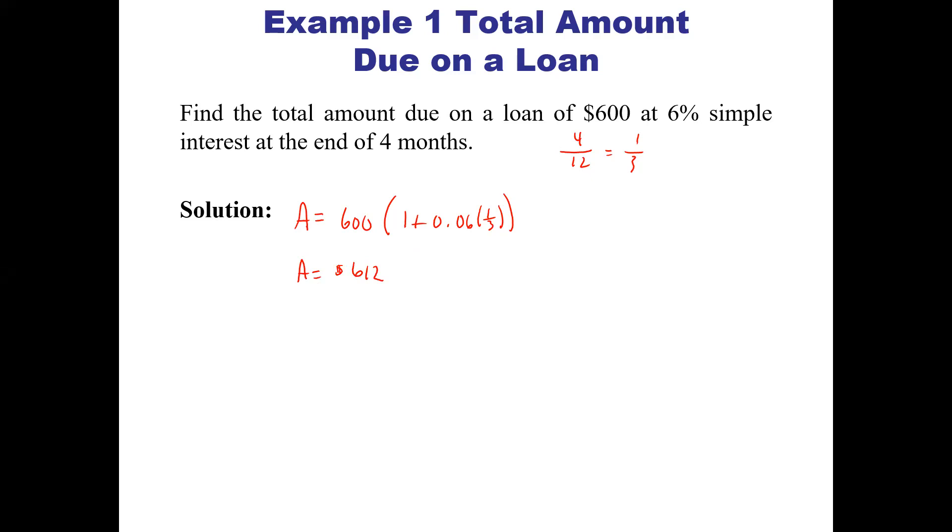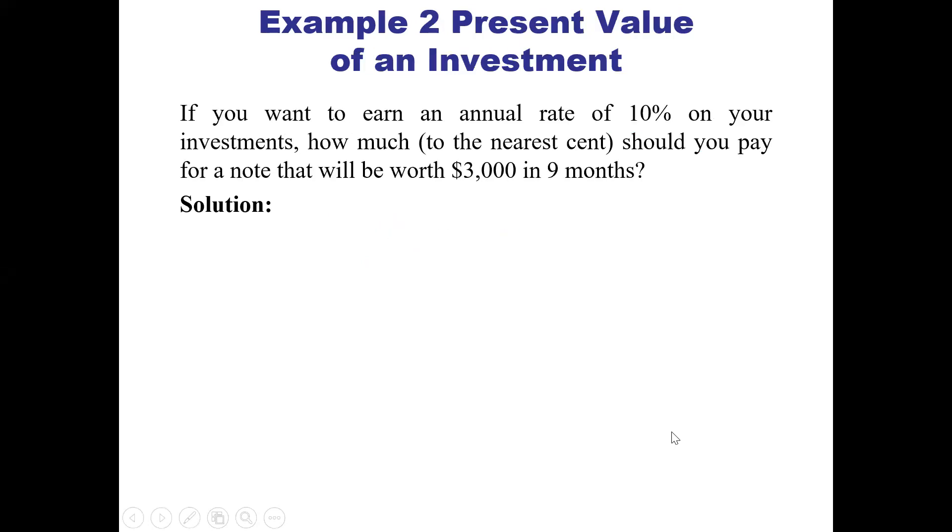Example 2: If you want to earn an annual rate of 10% on your investment, how much to the nearest cent should you pay for a note that will be worth $3,000 in nine months? The future value A is $3,000.